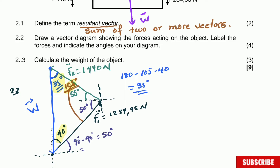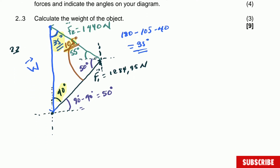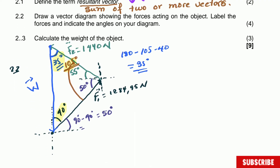Question 2.3 says: calculate the weight of the object. For this, we use the equilibrium system — Newton's first law. The first thing I'm going to do is draw a free body diagram, which is different from the picture just done. I'm going to do it right on axes — this is to understand the problem better, and it's recommended though not compulsory.